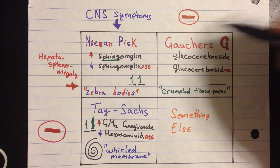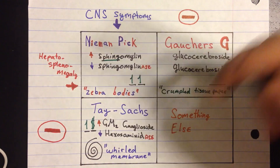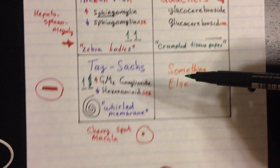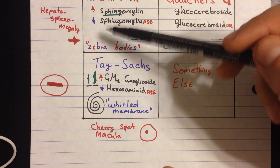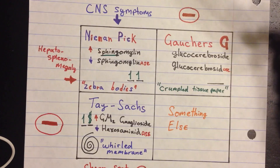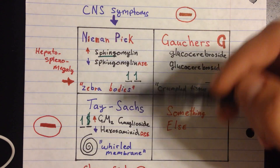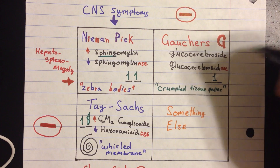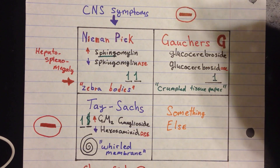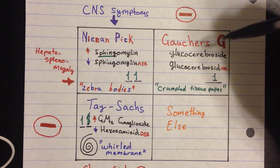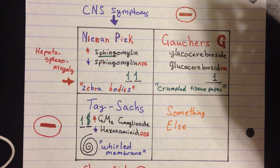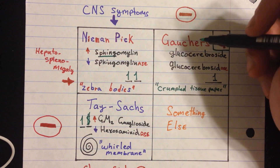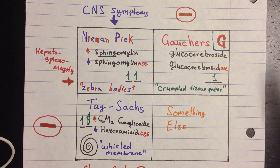Now, the last disease: Gaucher's. It's all red because it's just hepatosplenomegaly — no CNS symptoms. Also, there's no cherry-red spot on the macula, which you have with both Niemann-Pick and Tay-Sachs. So, if you have hepatosplenomegaly and none of those other signs, think about chromosome 1 — that's where this disease is found. Gaucher's G, the capital G, stands for glucocerebroside. It's a G disease, and everything begins with a G except for the keyword: crumpled tissue paper.